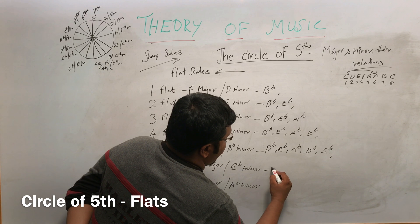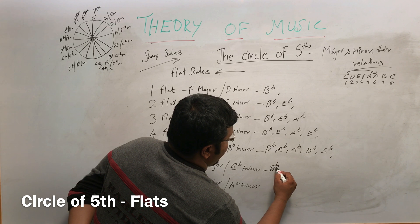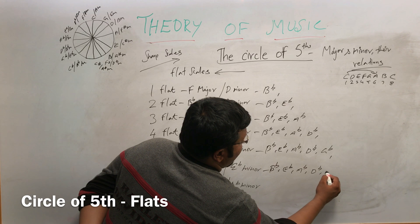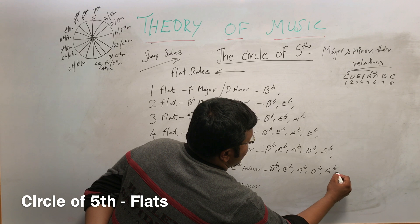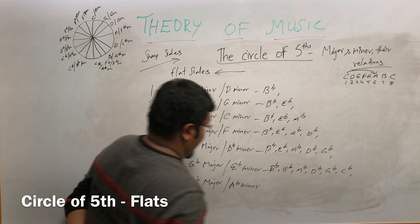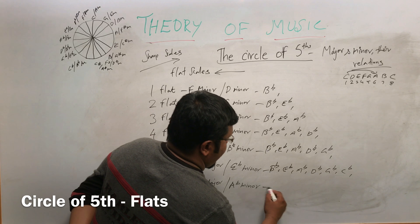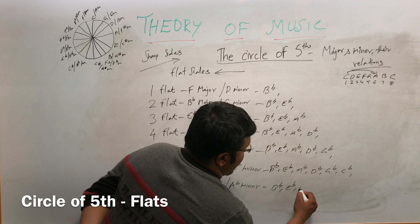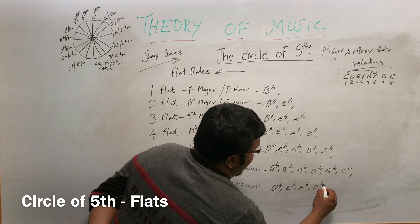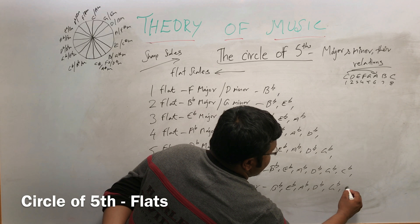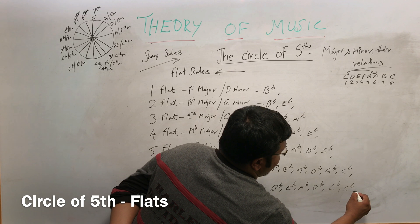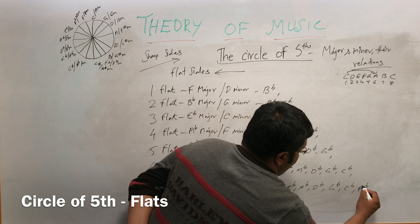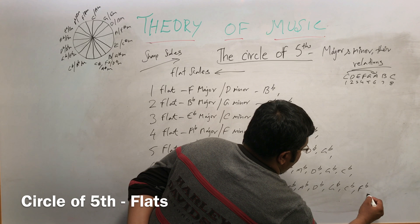In the six-flat scale, the flats are B, E, A, D, G, and C. In the seven-flat scale, the flats are B, E, A, D, G, C, and F.